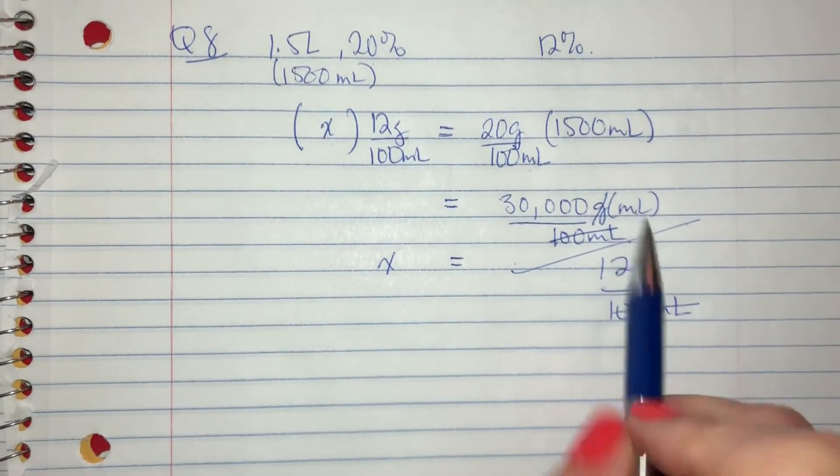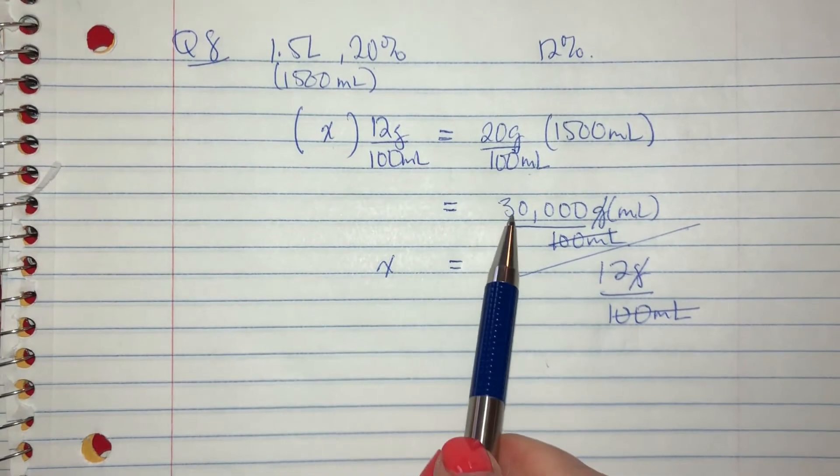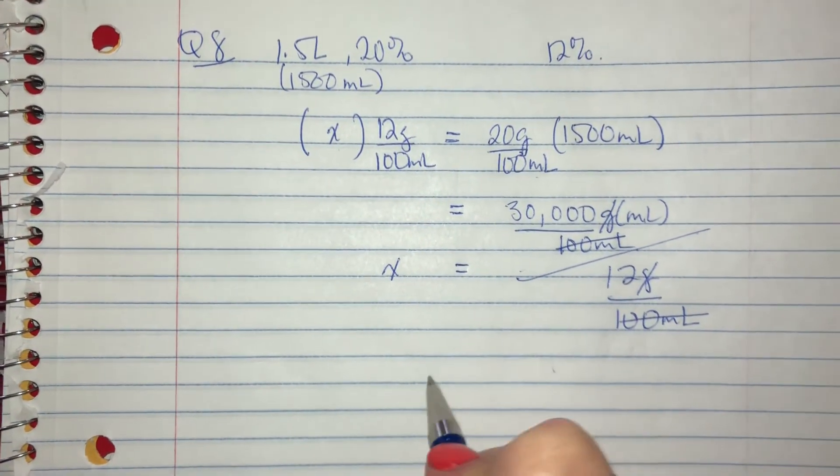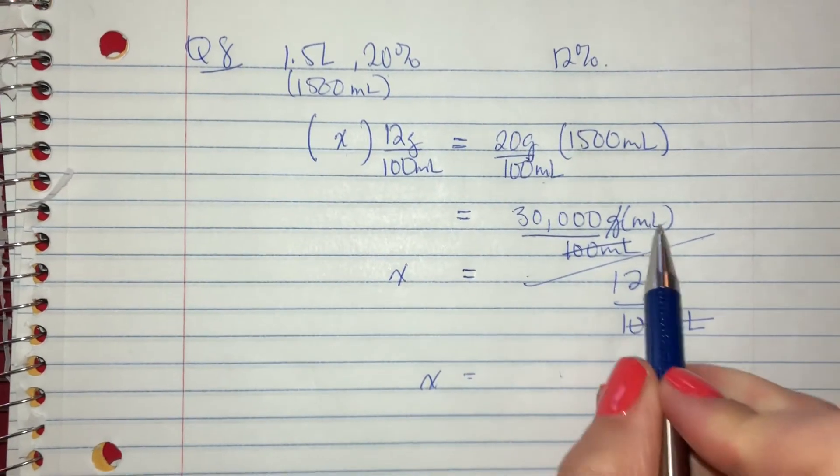The only unit that I have left is mils. So really what I'm talking about is 30,000 divided by 12.